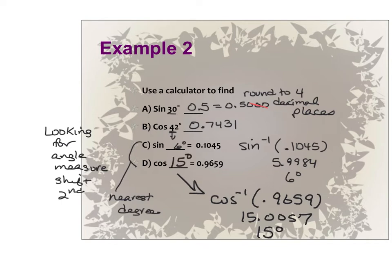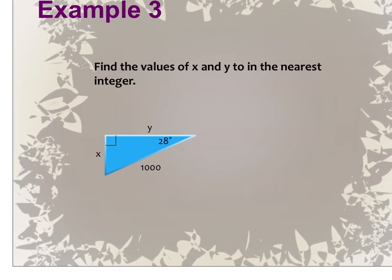Remember, your calculator must be in degrees mode. One way to check: type in tangent of 45 — it should give you 1. If it gives you a crazy decimal, you know you're not in degrees. Now for this problem, it wants us to find the values of x and y to the nearest integer. We're going to look at our given information and decide which trig function helps us find x and which helps us find y.